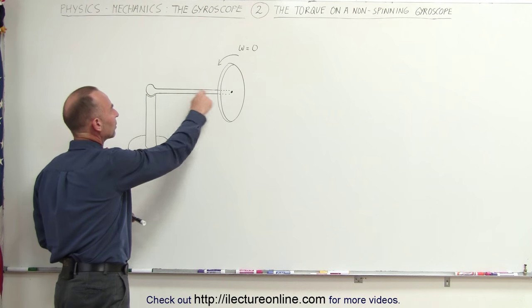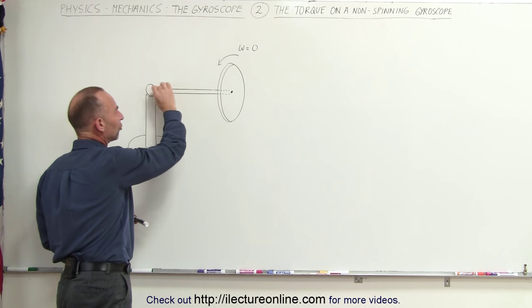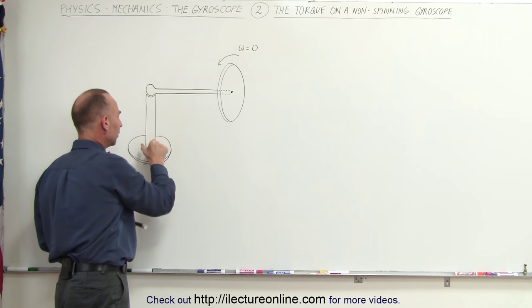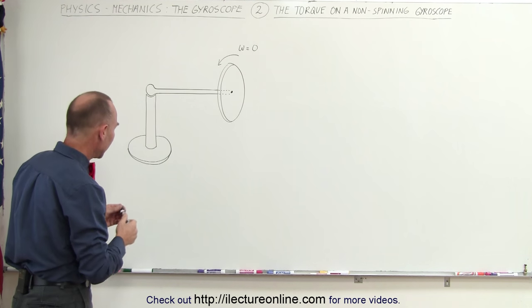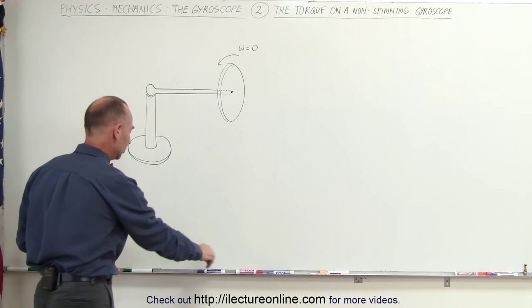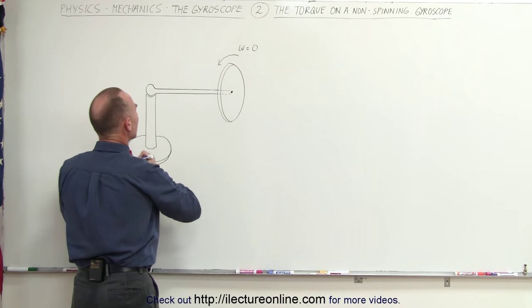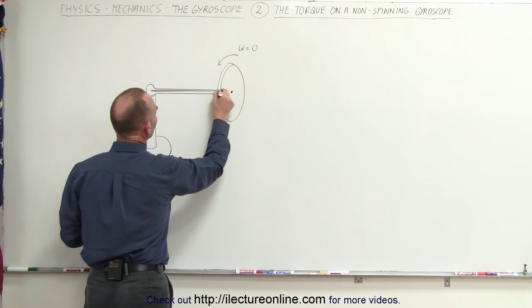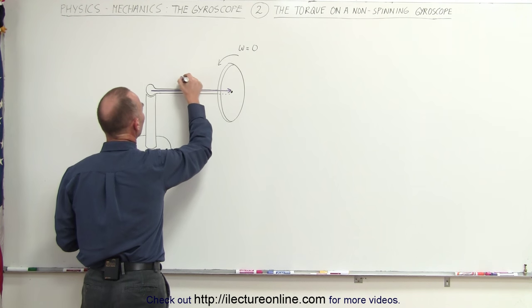Assuming that the rod here that supports the gyroscope has no mass, for the time being it's supported here by this post. The distance r to where the force is acting, this distance here, is called the position vector r.